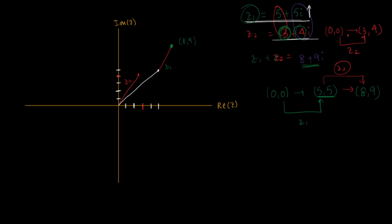If you wanted to draw the complete Argand diagram, you connect the origin to the final point (8,9). This right here, drawn in blue, is the sum of Z1 and Z2.